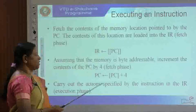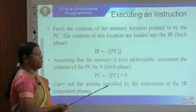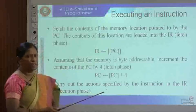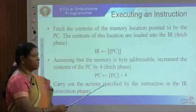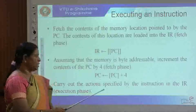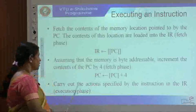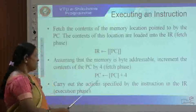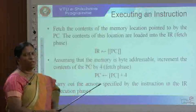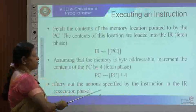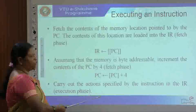Next, carry out the action specified by the instruction in the instruction register. The decoder circuit analyzes the contents of the IR and the control circuitry initiates the action by generating the necessary control signals. If the instruction contains one word, there will be one fetch phase followed by the execution phase. If the instruction occupies more than one word, there will be multiple fetch phases followed by an execution phase.